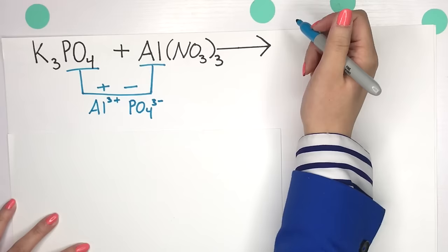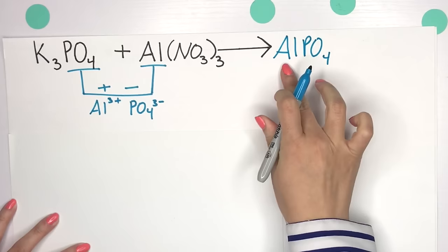So our first product, we don't have to add any other subscript and it's just aluminum phosphate.